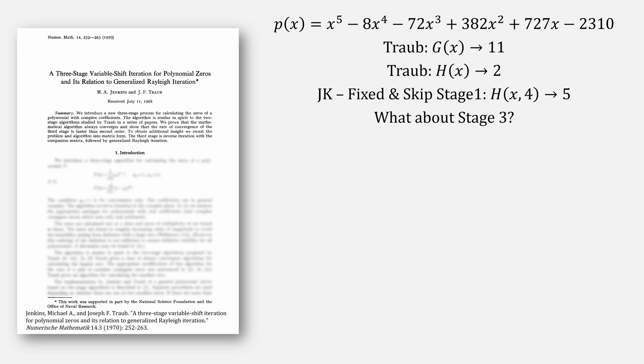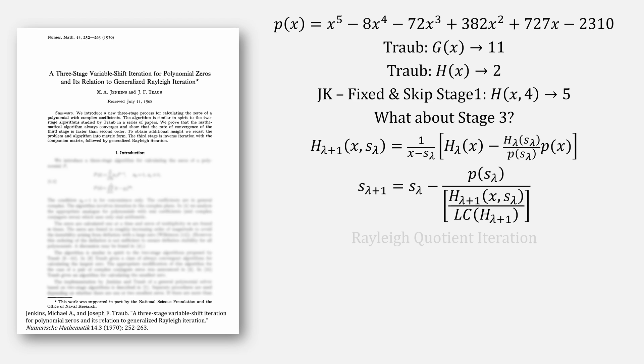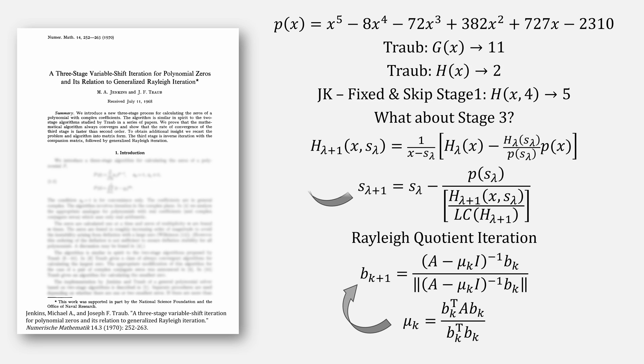But what about this third stage? For that, Traub updates our h equation using our new value for s after every step. You can think of this as similar to the Rayleigh quotient iteration where after you update your value for v, you then compute a new mu value and plug everything in. Here's what that third updating stage would look like. Rather than using a fixed value,